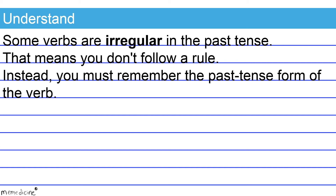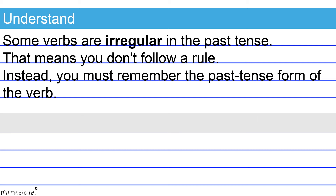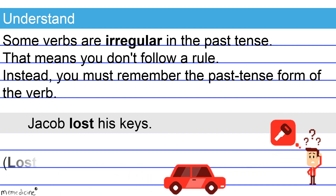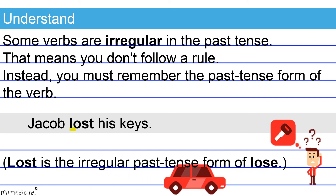Check out this example: Jacob lost his keys. 'Lost' is the irregular past tense form of the verb 'lose.' This is a correct shift, and the overall sentence is formatted correctly.